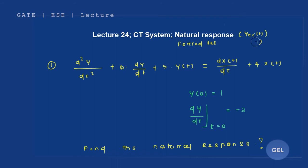In this video lecture, we are only focusing on natural response. It is called natural response because it has some initial output — it has some initial stored energy — and that stored energy will be utilized to generate a response naturally. That is why it is called the natural response.